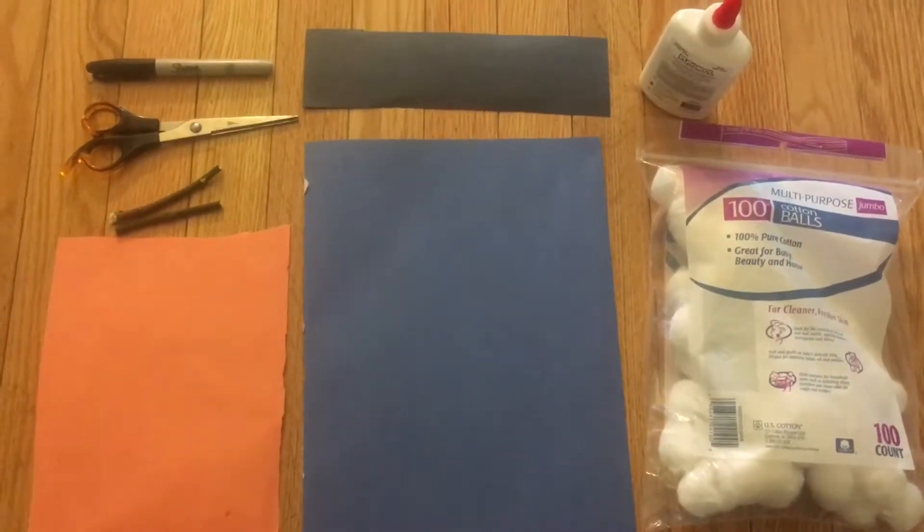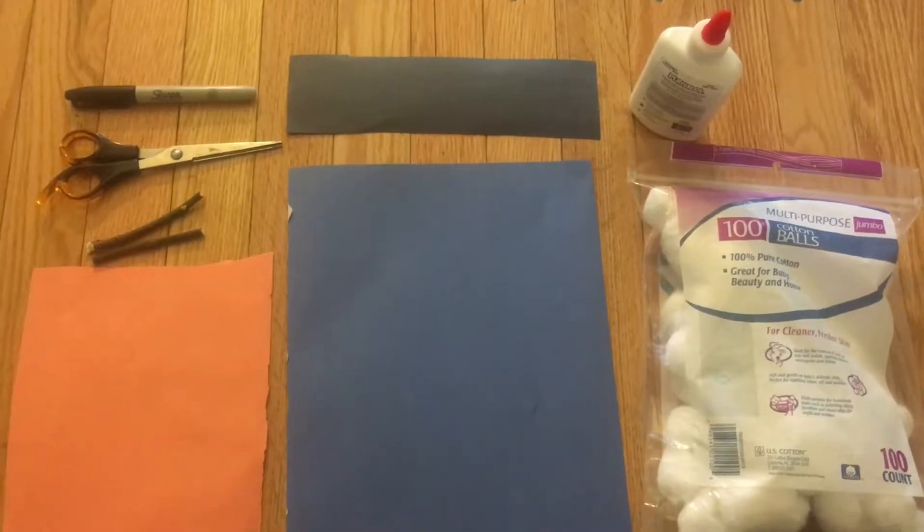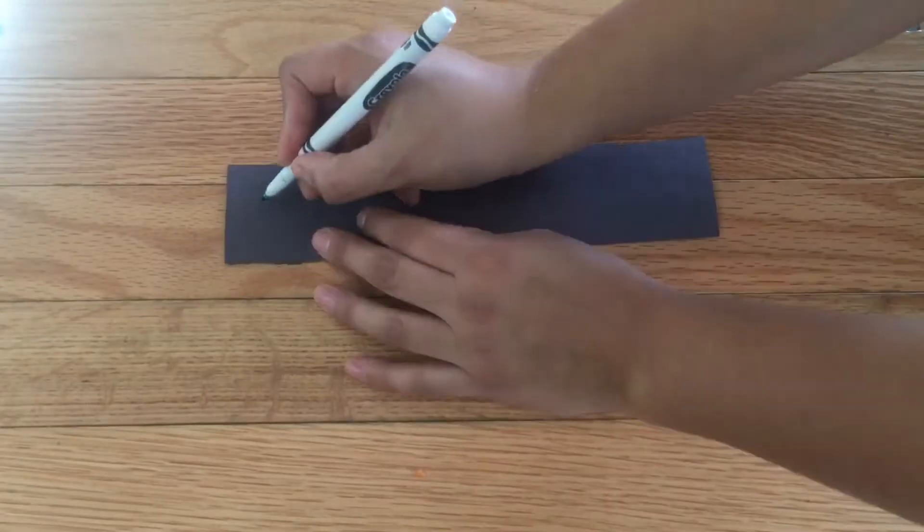Hi guys, for this tutorial you will need scissors, marker, construction paper, glue, cotton balls, and two sticks. We're gonna start off with our black paper, draw three circles and cut them. These are gonna be our buttons.